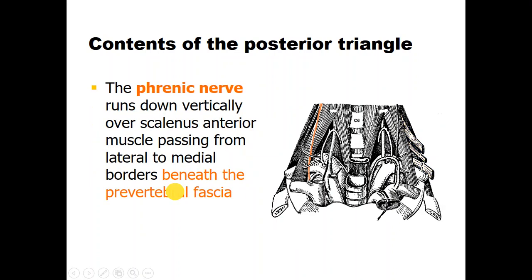The phrenic nerve also lies in the posterior triangle, passing over the scalenus anterior muscle, descending from the lateral side to the medial side of the muscle, and then passing to the pleural cavity to supply the diaphragm. It is the primary motor supply of the diaphragm, and is in fact a mixed sensory and motor nerve.